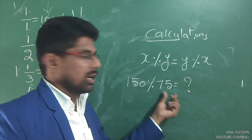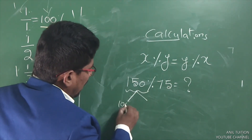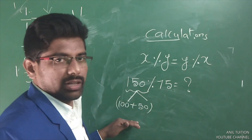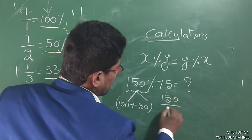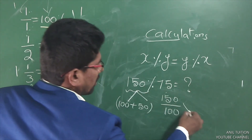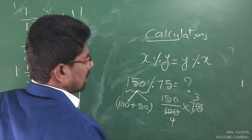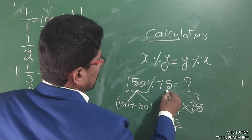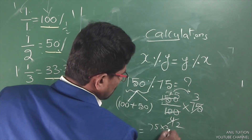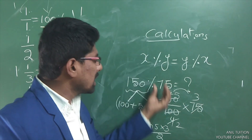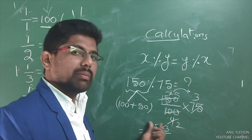Now, we have 150% of 75. We can do the calculations. Here, 150 is 100 plus 50. So 100 plus 50 into 75, or 75 into 3 by 2. The problem is complicated if done directly — let's use a better approach.